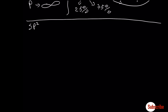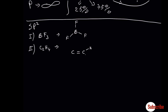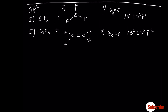We have two examples. One is boron trichloride, and the second one is ethylene. Let's draw the Lewis structure and write the electronic configuration. Let's draw the diagram for boron first.